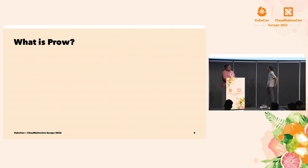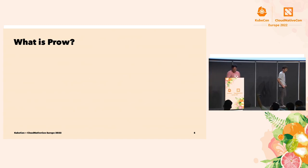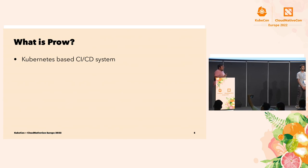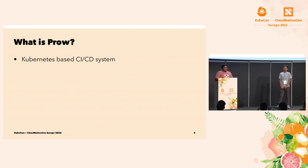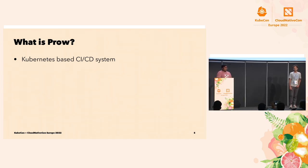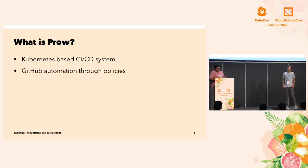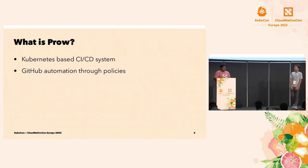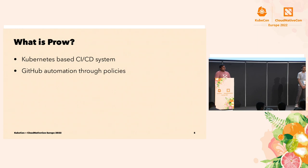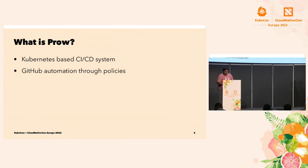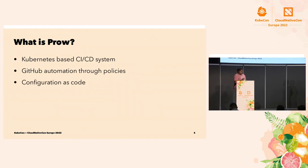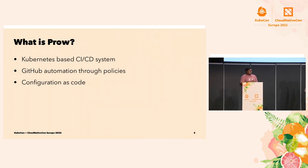So, what is Prow? Prow is a Kubernetes-based CI/CD system. Being based on top of Kubernetes, it brings all the pros of running any application on Kubernetes — like replication, scaling, rolling updates, and the highly available nature of stateless workloads. Prow can manage the lifecycle of pull requests, like review approvals and merging them based on some criteria through a component called Tide, which we will take a brief look at later.